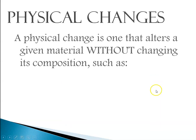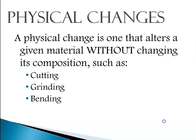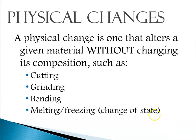Physical changes are changes that alter a material without changing its composition. Some examples would be cutting a piece of paper in half — it's still paper on both sides. Grinding up a block of salt into a fine powder is also a physical change. Bending a piece of copper wire — it's still a copper wire; I haven't changed its composition. Melting and freezing, or boiling and condensing, are changes of state, so they're physical changes. There's no composition change.